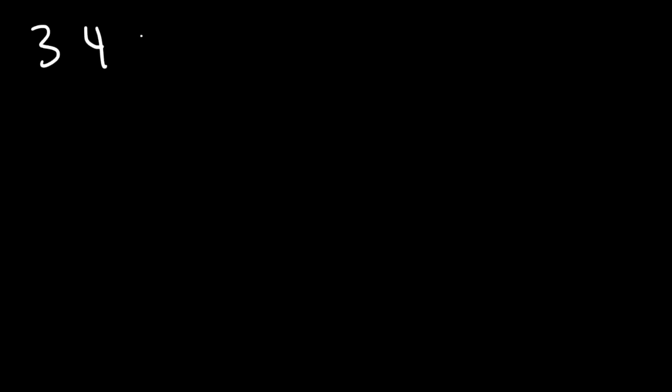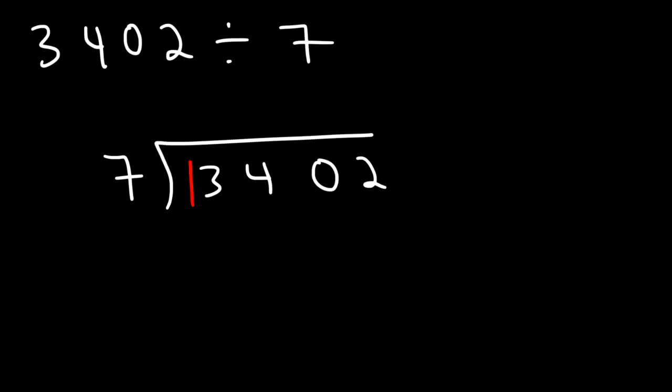Let's divide 3402 by 7. So how many times does 7 go into 34? 7 goes into 34 four times. 7 times 4 is 28. And 34 minus 28 is 6. So let's transfer the 6 to the next number.